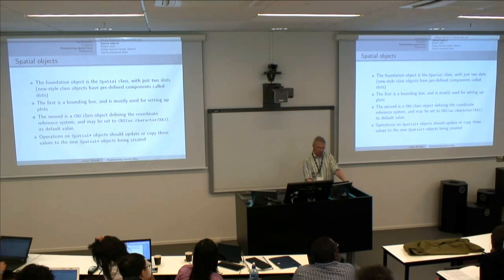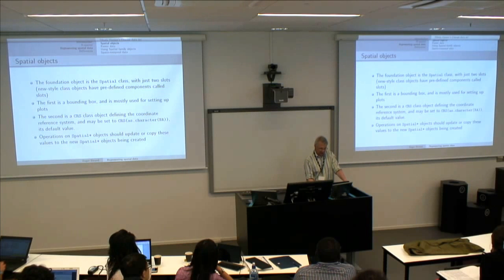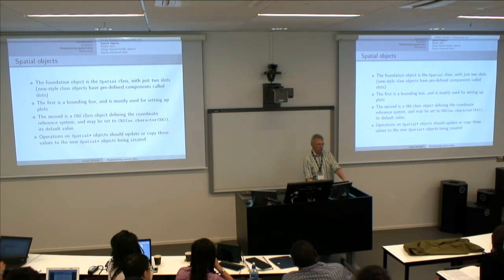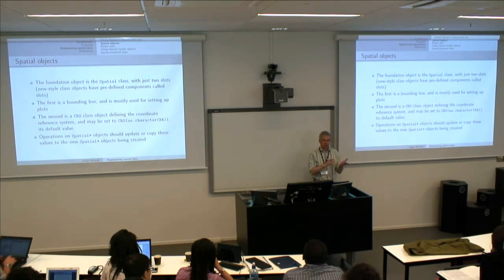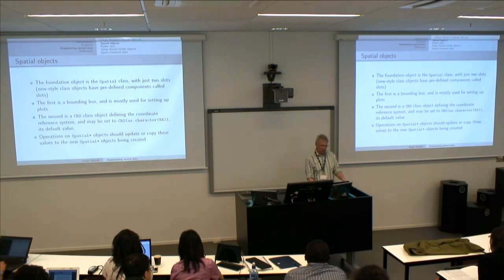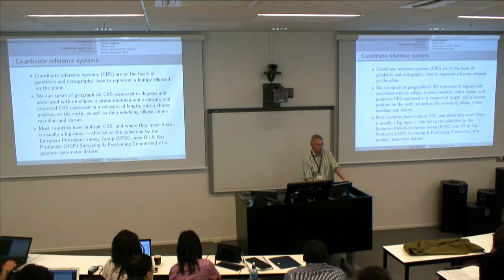The foundation object we decided on was a spatial class with just two slots — two pieces of information crucial to instantiation: first, a bounding box so we know which part of the world we're talking about; and second, the coordinate reference system. We need to define a coordinate reference system because we assume these classes are used with spatial data. The coordinate reference system can be set to unknown, but it has to be given.